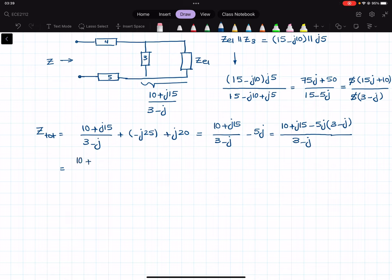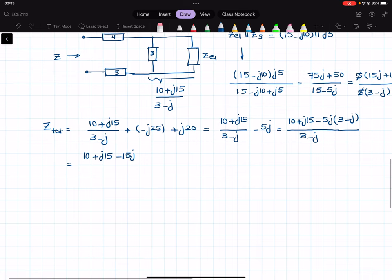And then I have 5J multiplied by J, it would be negative 5. So minus and minus would be positive, so we're going to have positive 5 over here. And then over 3 minus J. So these two will be canceled, so we're going to be left with 5 over 3 minus J.